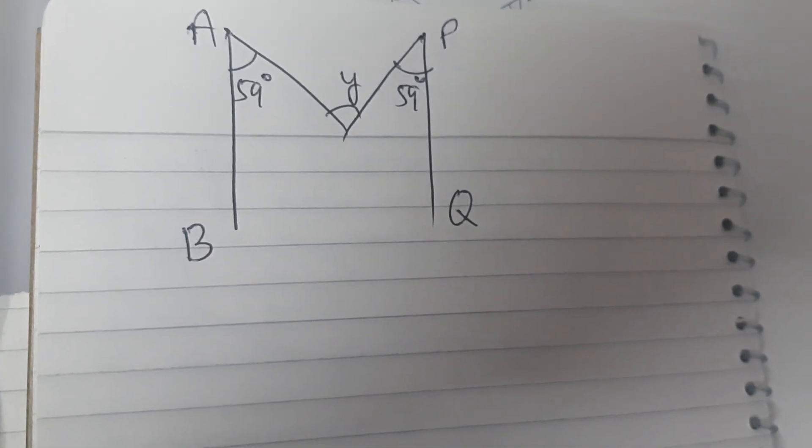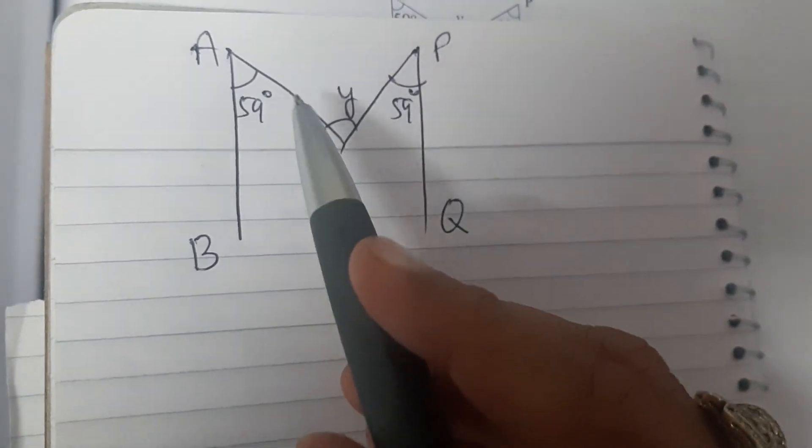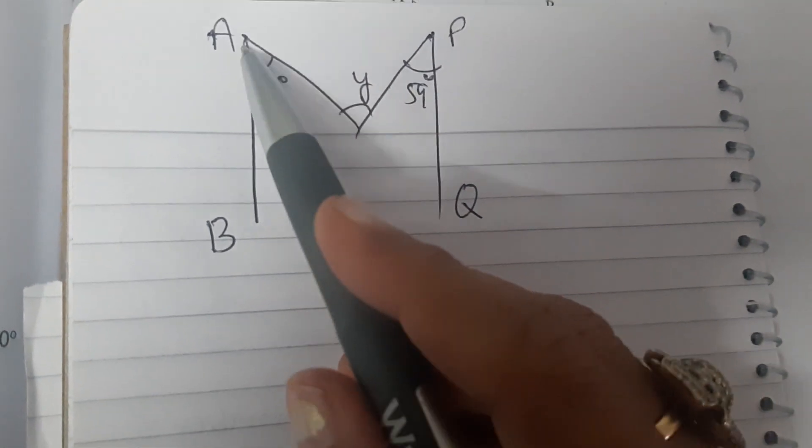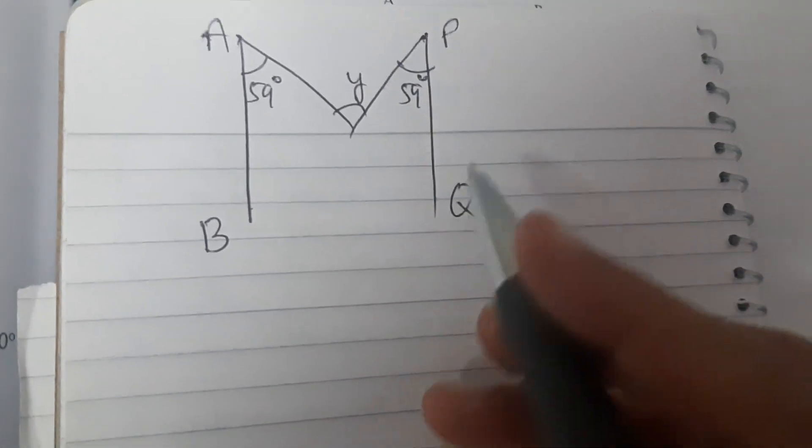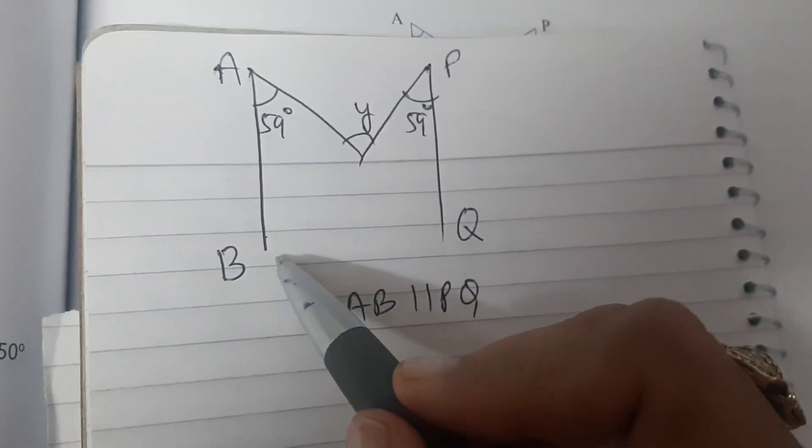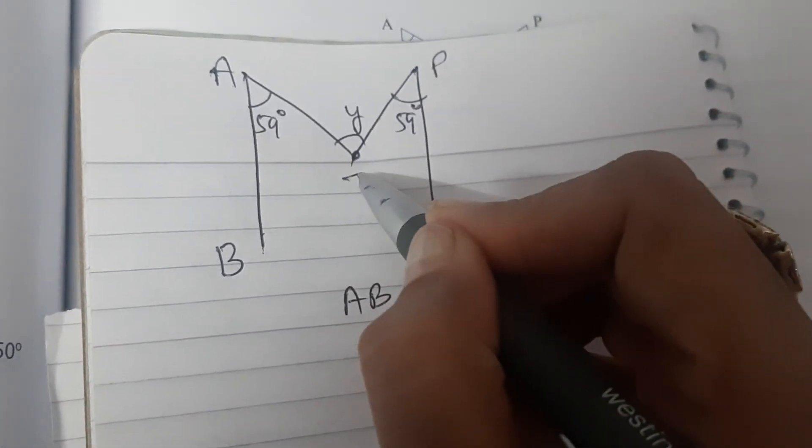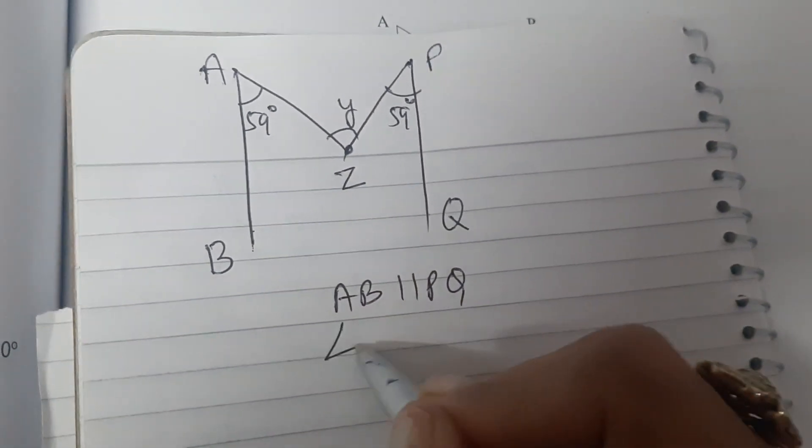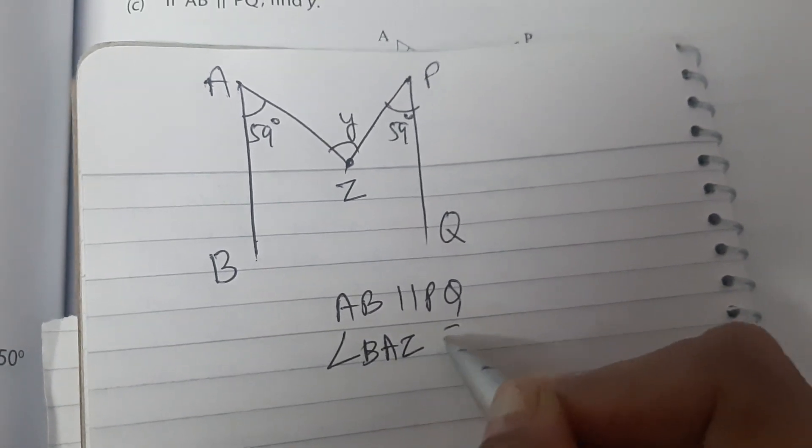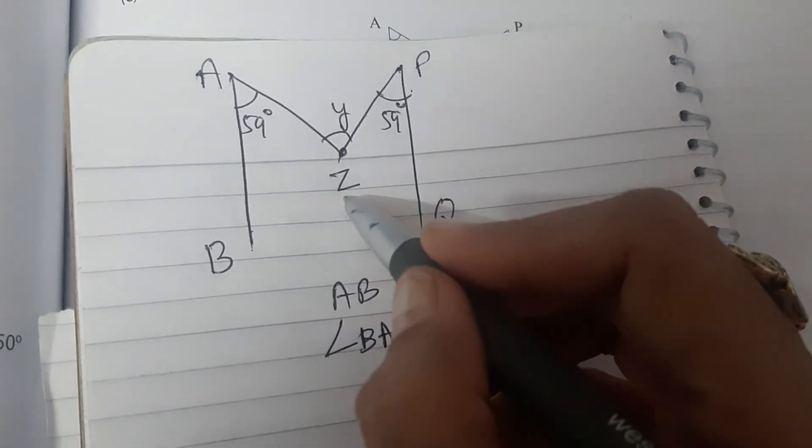Dear students, let us solve this question from the chapter parallel lines. Here it is given that AB is parallel to PQ, and angle BAZ is 59 degrees, angle QPZ is also 59 degrees, and we have to find the value of Y.